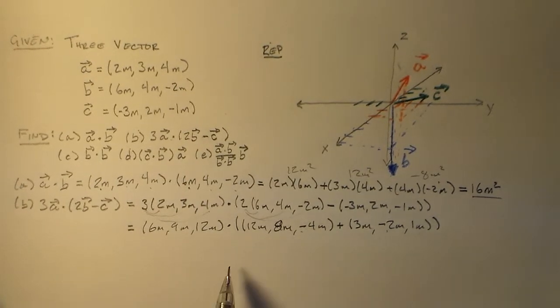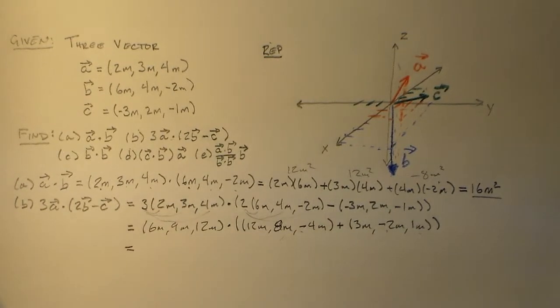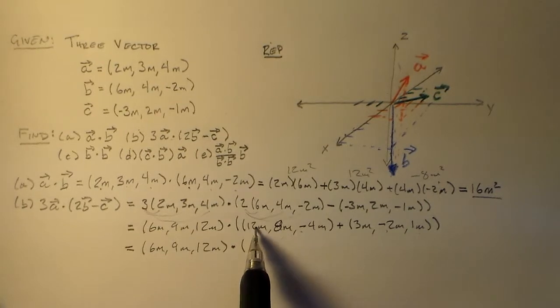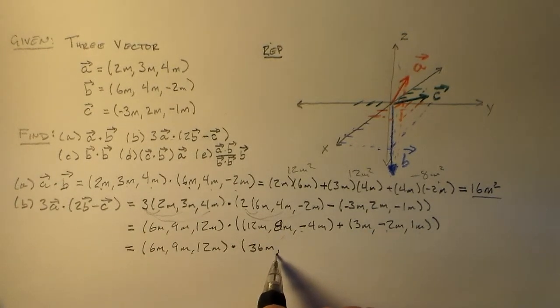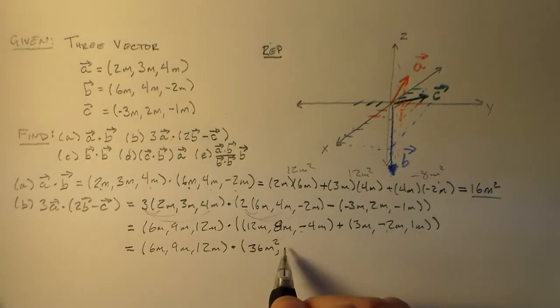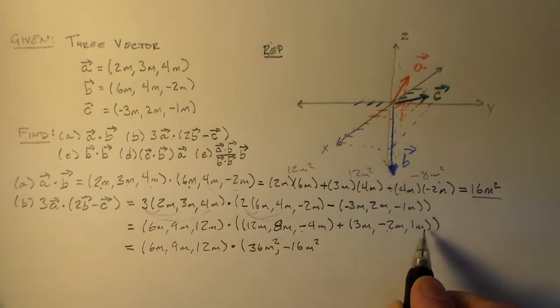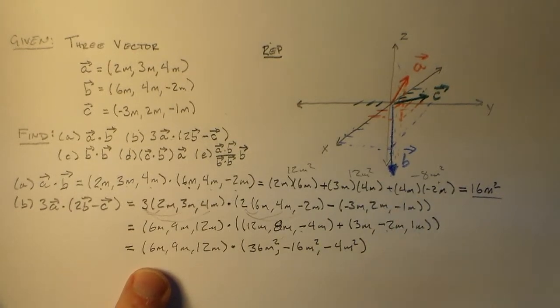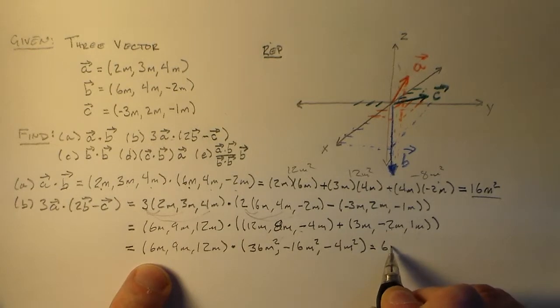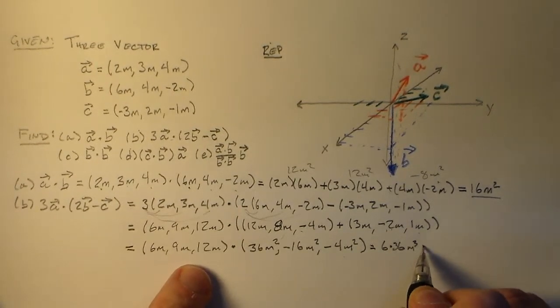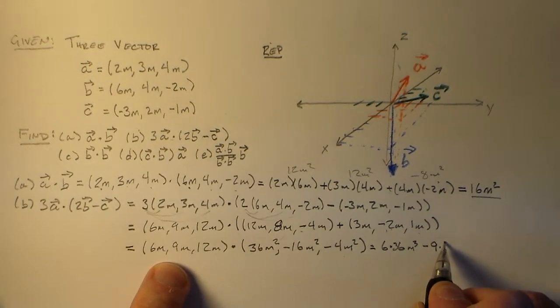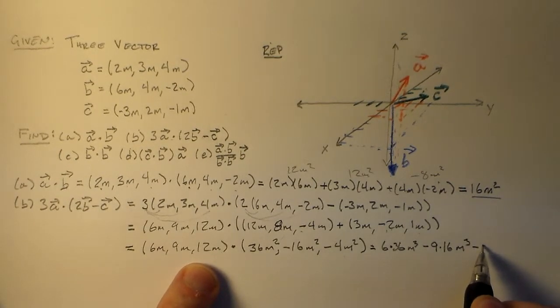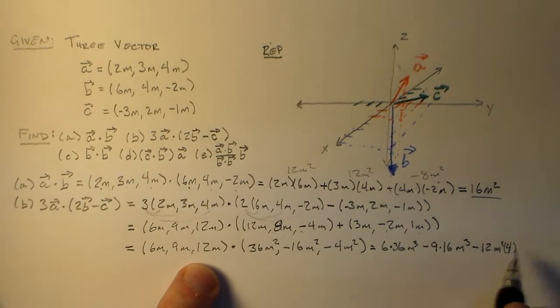Next, we have to do this addition. Before we can do the dot product, we can do the addition, or we can factor through the product as well. This is really math, so there are all sorts of equivalent ways to do this. So, 12 plus 3 is 15 meters, 8 minus 2 is 6 meters, minus 4 plus 1 is minus 3 meters. And now we start doing this. So that's 6 times 15 meters squared, plus or minus because there's a minus sign there, so 9 times 6 meters squared, and then we have 12 times minus 3, so we have minus 12 meters squared times 3.